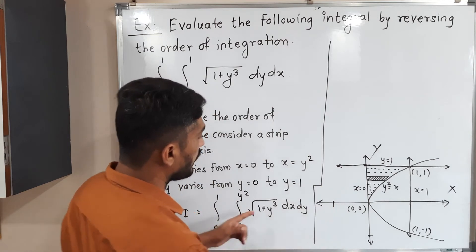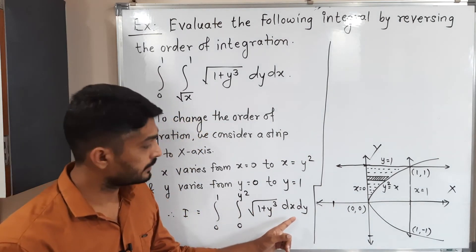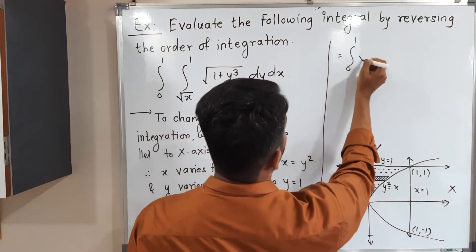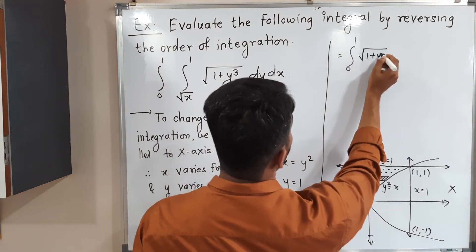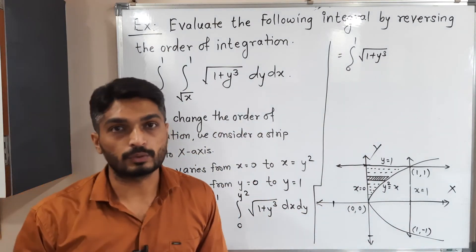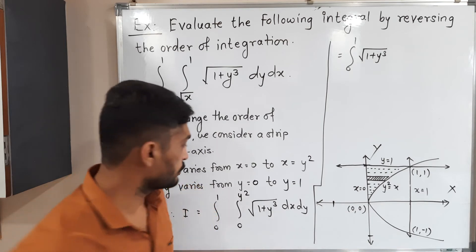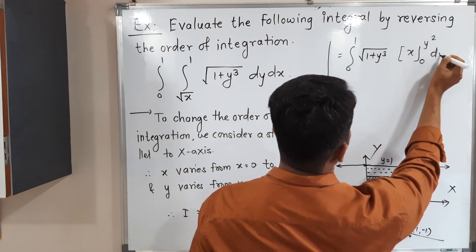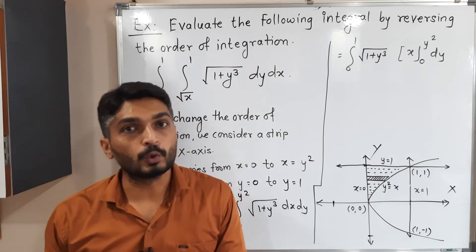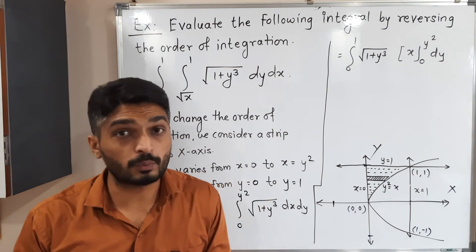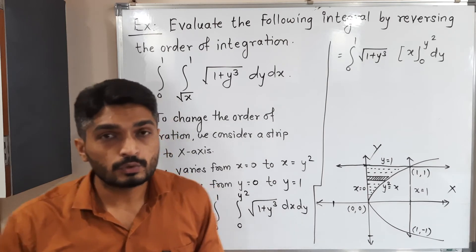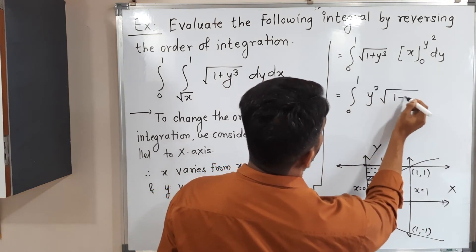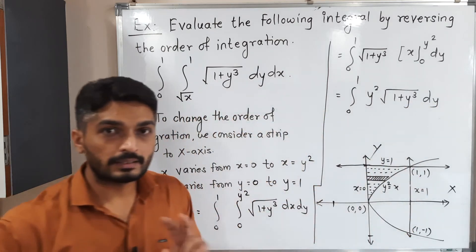We now integrate with respect to x. Since √(1 + y³) is a term in y only, it is constant with respect to x and can be taken outside the inner integral. The integral of dx is x, evaluated from 0 to y². Substituting the limits gives y² − 0 = y². So the expression becomes I = ∫₀¹ y² √(1 + y³) dy.